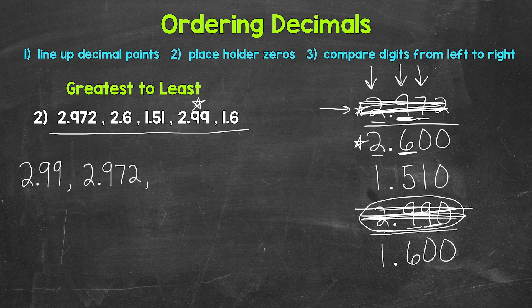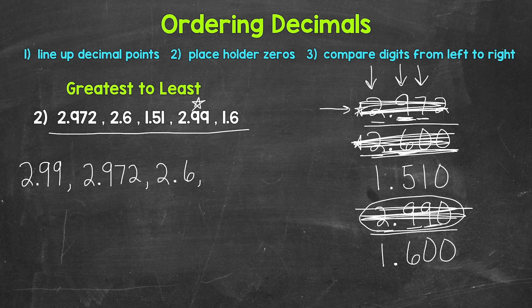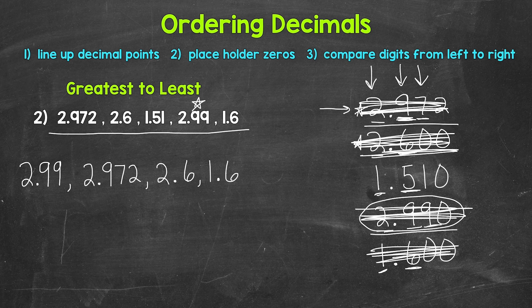Let's continue on. Looking at the ones place, we have a two, a one, and a one. Two is the greatest here, so that's what's going to come next: two and six tenths. We can cross this off and continue on. Looking at the ones place, we have a one and a one, so let's move over to the tenths place. We have a five and a six — six is greater than five, so that's what comes next: one and six tenths. And we only have one left: one and fifty-one hundredths. So that is last. Now we are in order from greatest to least.